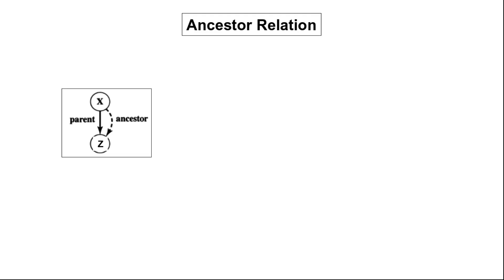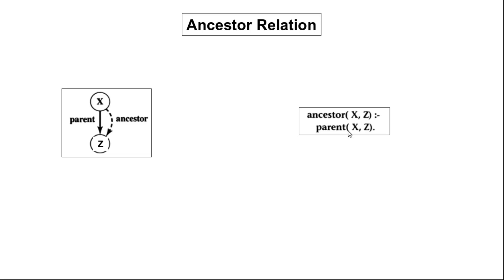We want to detect whether x is an ancestor of z or not. This definition graph shows that if x is a parent of z, then definitely x is an ancestor of z. We can write the rule that x will be an ancestor of z if x is a parent of z. This would be the rule for this definition graph.